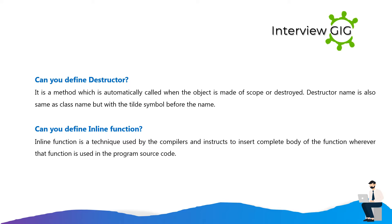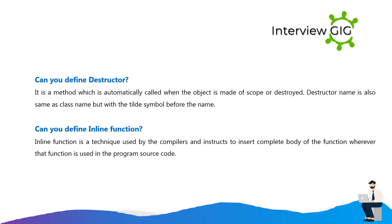Can you define destructor? It is a method which is automatically called when the object is made out of scope or destroyed. Destructor name is also same as class name but with a tilde symbol before the name. Can you define inline function? Inline function is a technique used by the compilers that instructs to insert the complete body of the function wherever that function is used in the program source code.